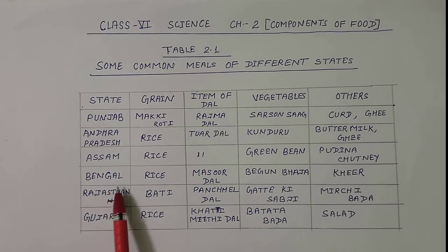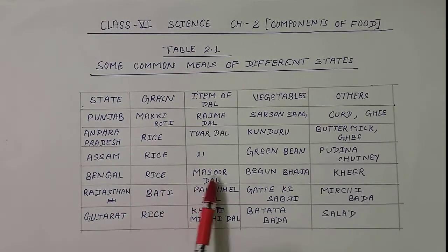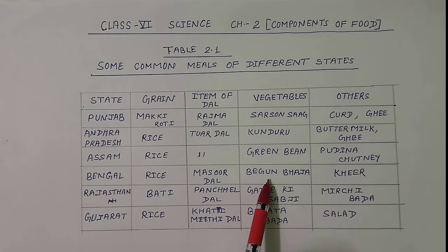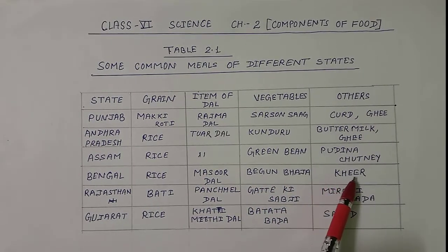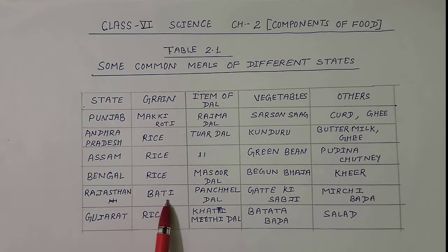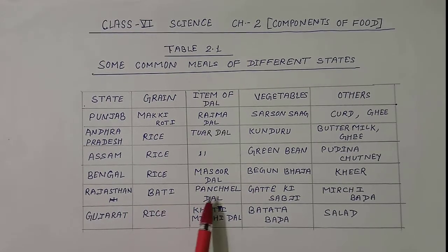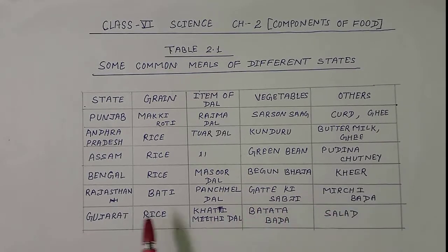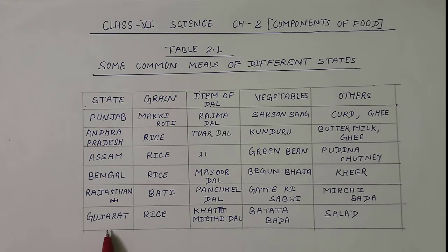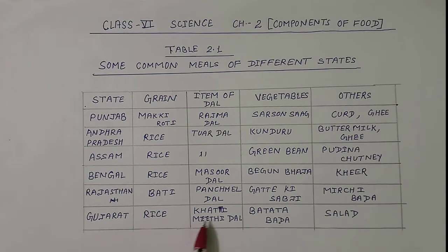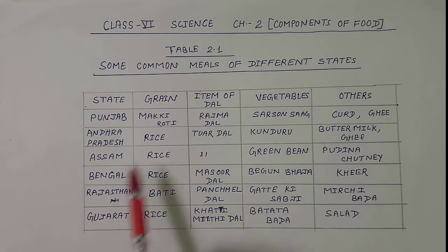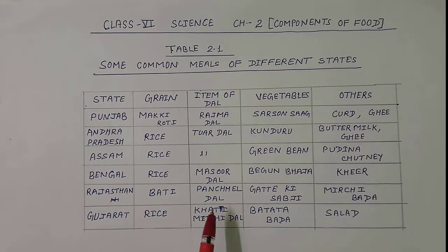In Bengal, rice is used as the grain, masoor dal for the dal item, and baingan bhaja is a famous vegetable dish. In others, they like to eat kheer. In Rajasthan, baati is the grain item, panch mel dal for dal, and gatte ki sabji for vegetables, with mirchi bada as an extra. In Gujarat, people like to eat rice, khatti meethi dal, batata vada, and salad. You should also write these same things in your copy.